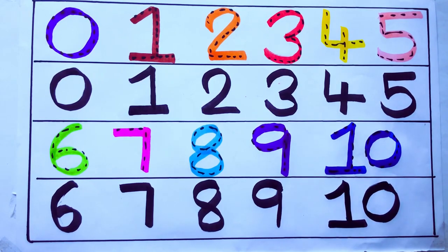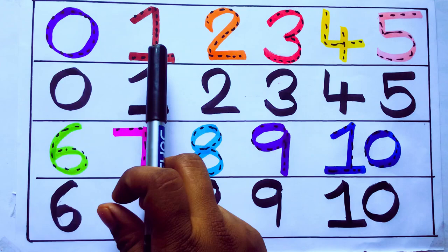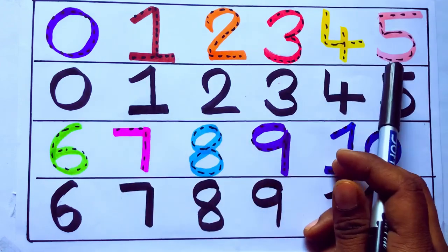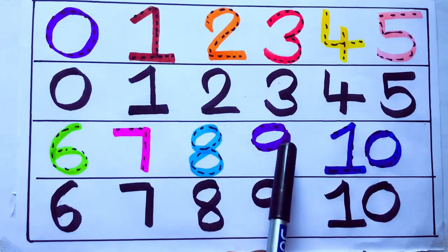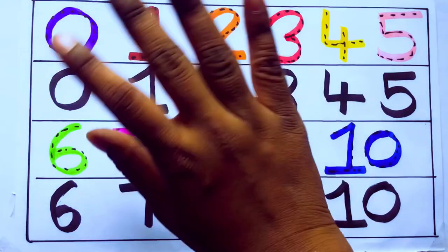One second learning numbers. 0, 1, 2, 3, 4, 5, 6, 7, 8, 9, 10. Okay. Bye kids.